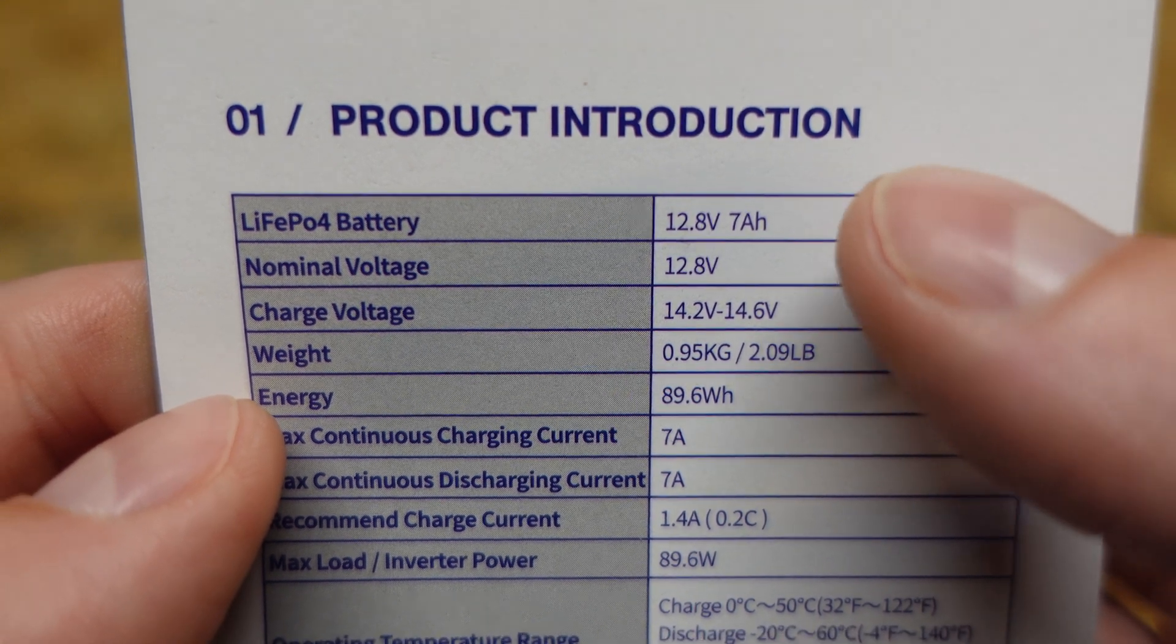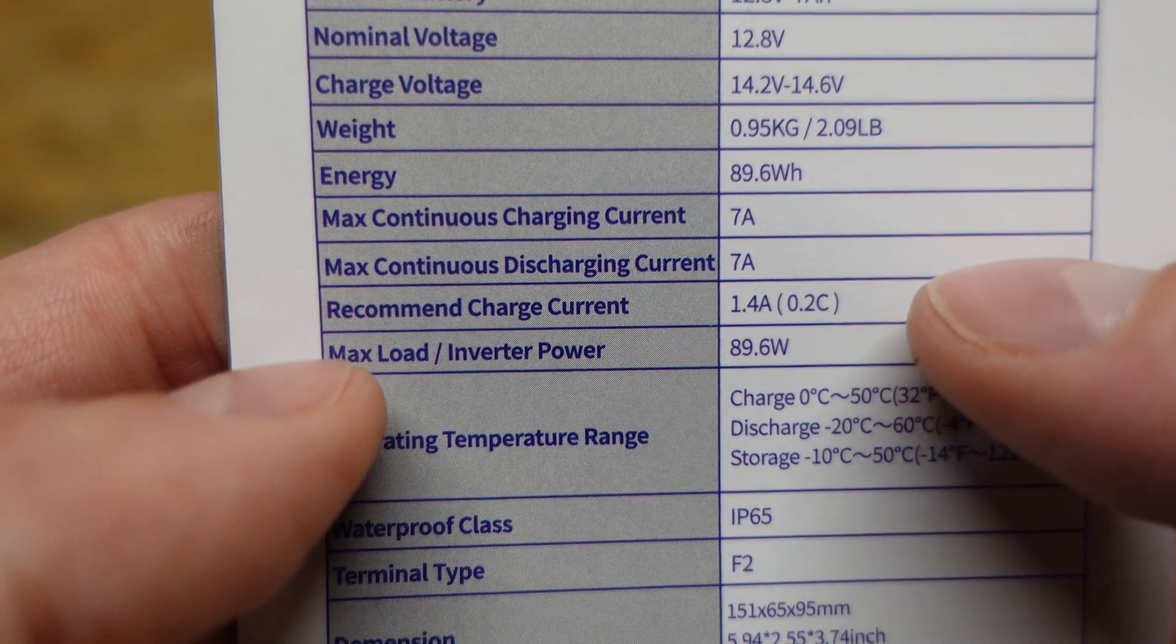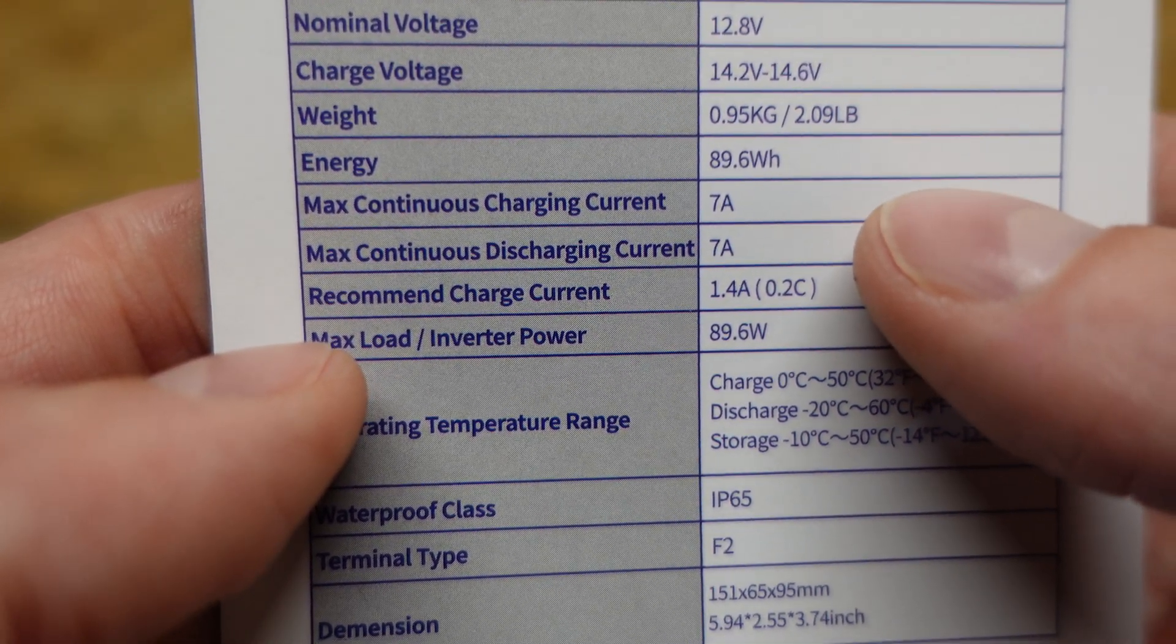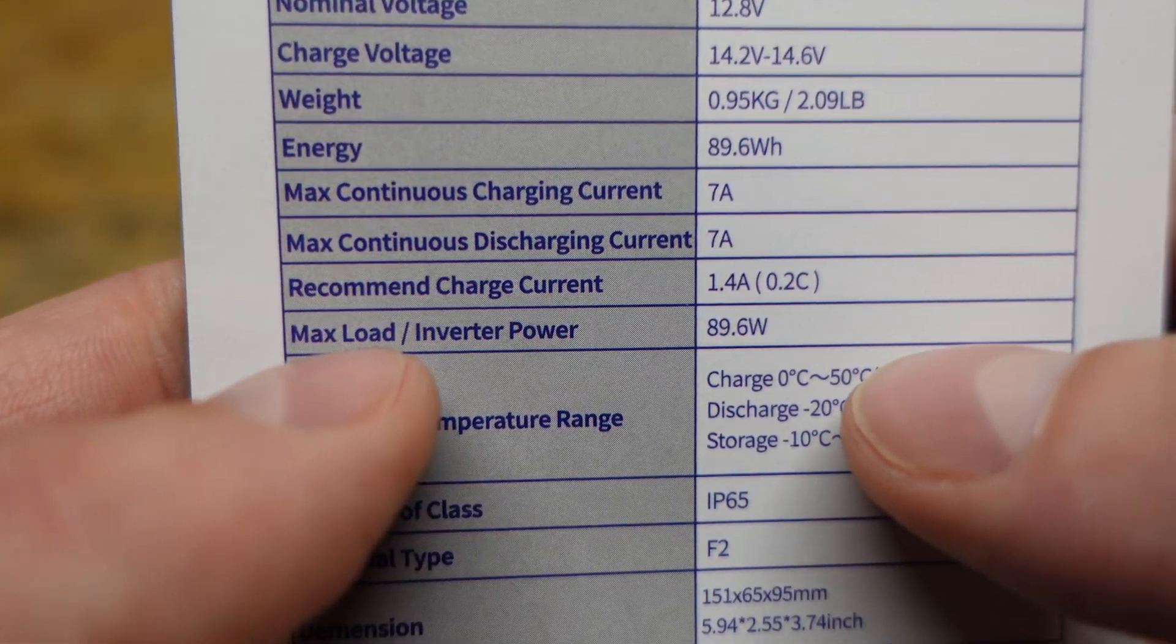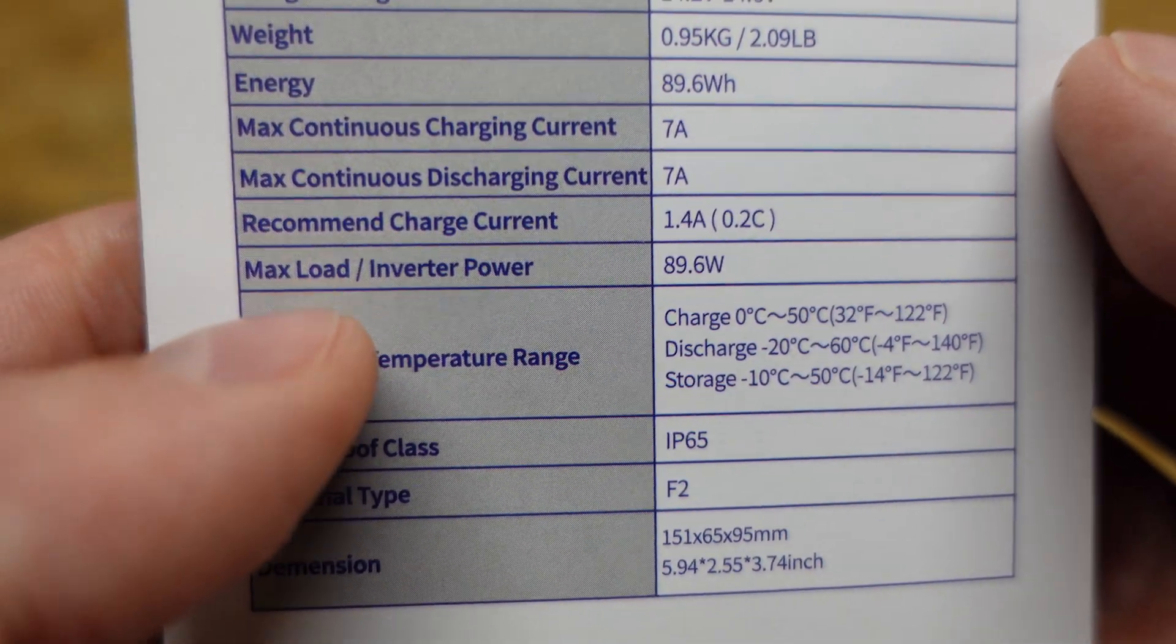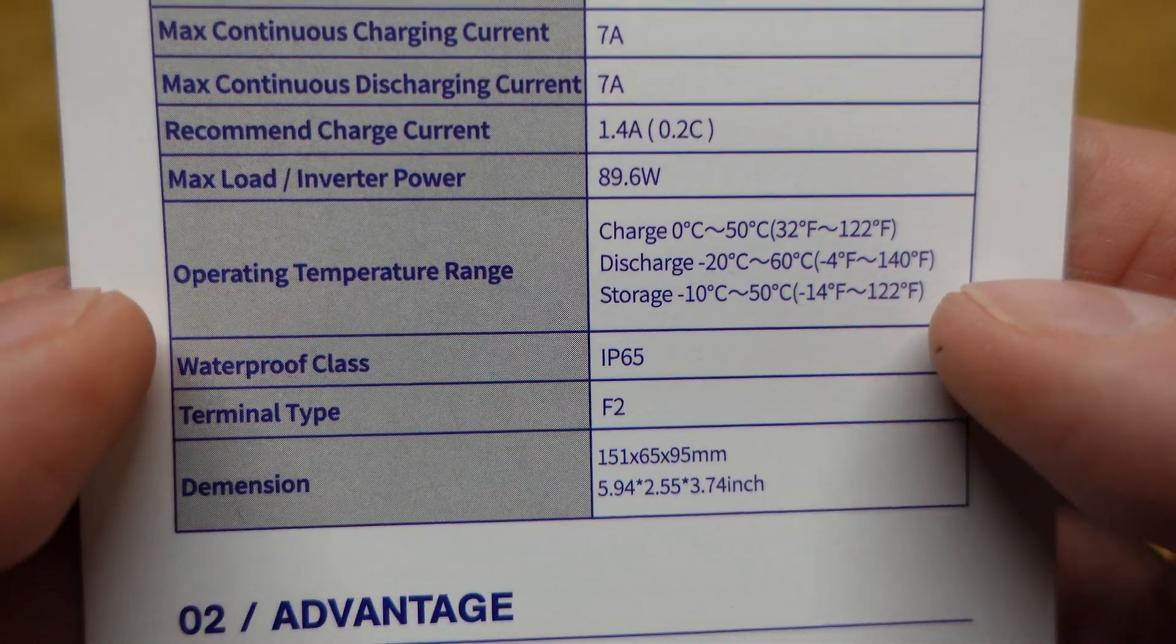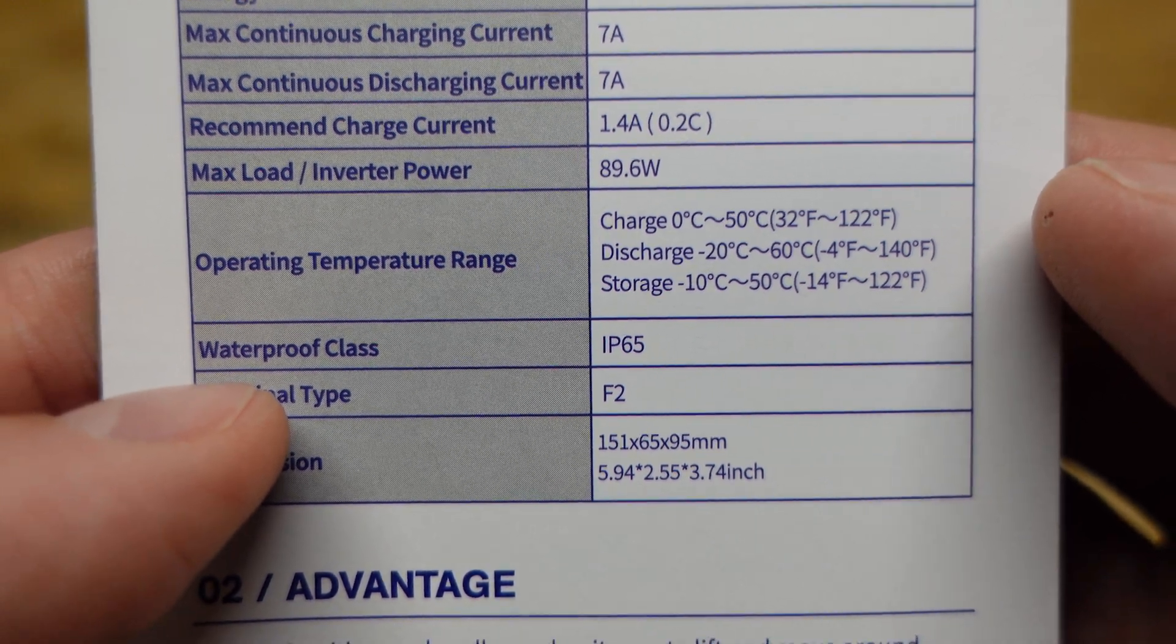As stated already, this is a 7 amp hour battery. Charge voltage is 14.6, that's normal. The maximum continuous charge and discharge is 7 amps which is a 1c rate. Recommended is 1.4 amps or 0.2c rate, that is what we tested at. And we see our temperature operating ranges here. This is not listed as having any sort of low temperature charge protection so I'm not expecting any.